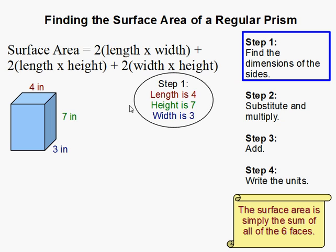You're going to have to find the length, width, and height. In this problem we're given the length is 4, the height is 7, and the width is 3.